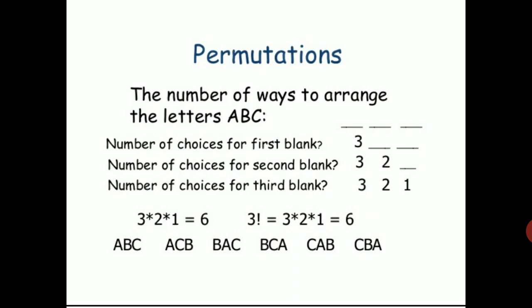For the second chair, we have already assigned one letter to the first chair, so the number of choices for the second chair is 2. The number of choices for the third chair is 1. Total arrangements: 3 × 2 × 1, that is 3 factorial ways.